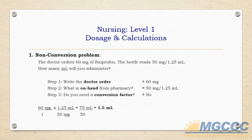The first problem: a doctor orders 60 milligrams of ibuprofen. The bottle reads 50 milligrams per 1.25 milliliters. How many milliliters will you administer? Step one is to write the doctor's order, which is 60 milligrams. Step two is what is on hand from the pharmacy: 50 milligrams per 1.25 milliliters. Step three: do you need a conversion factor? In this problem, the answer is no.